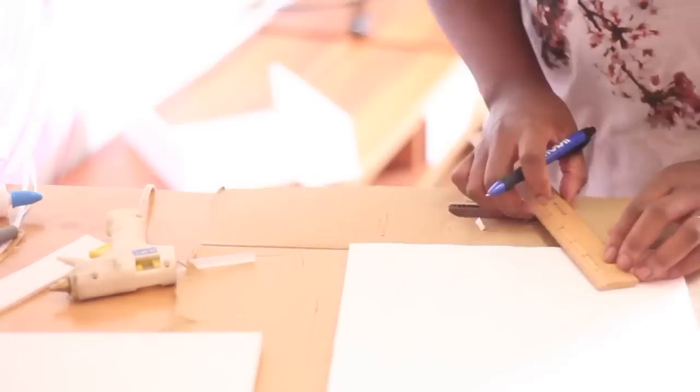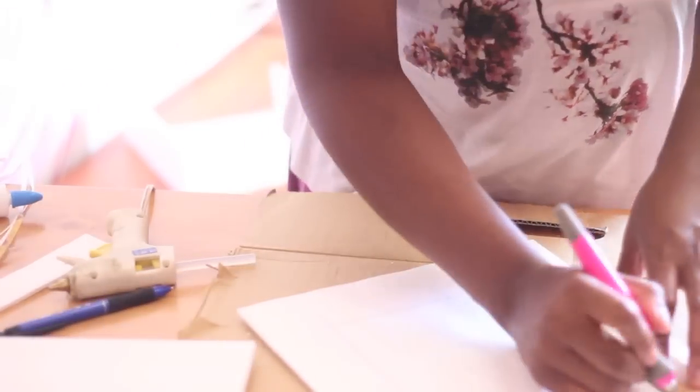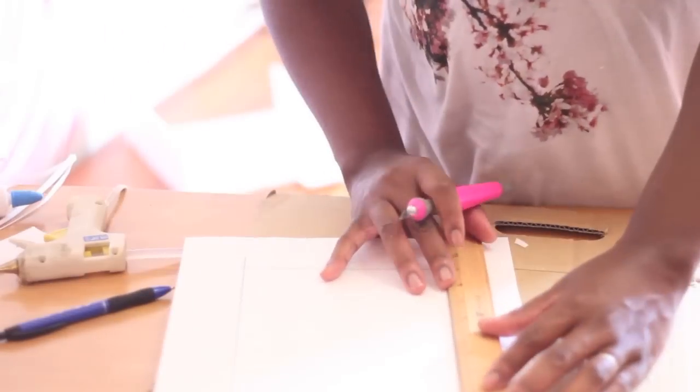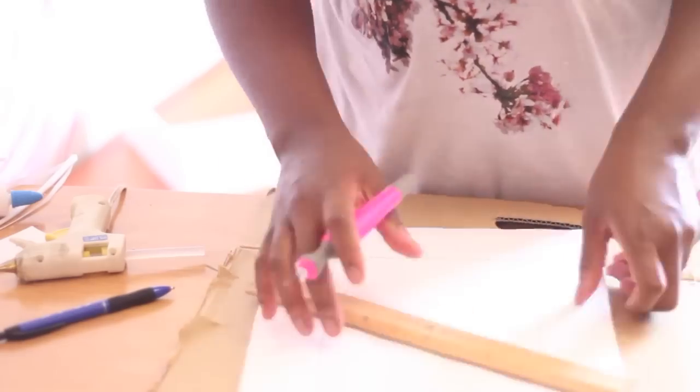Once you have your frame cut out, we need to cut out the center. I made this really simple and measured off two inches in from the outside all around the frame. Once I completed this, I whipped out my exacto knife and got to cutting.